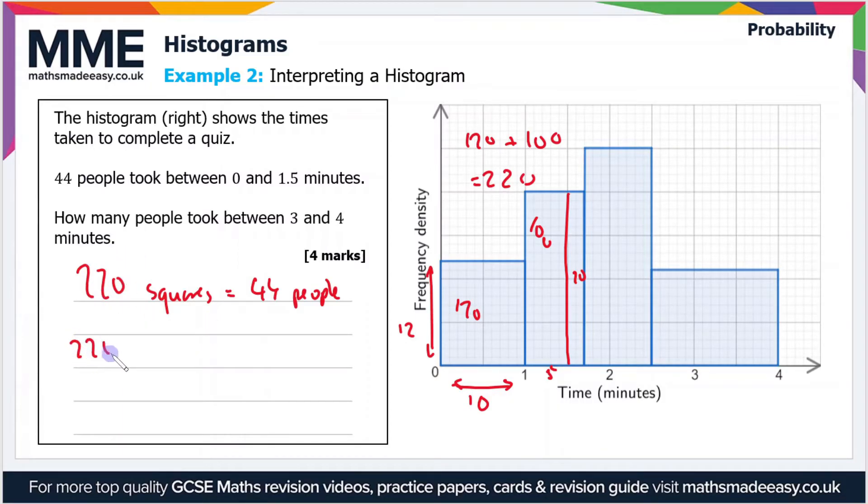So 220 divided by 44 is 5. So therefore one person equals five squares.